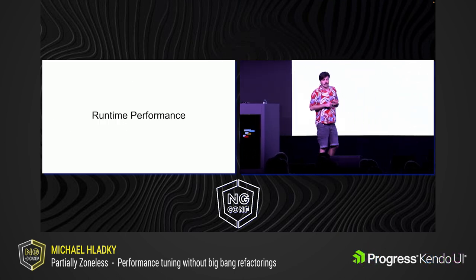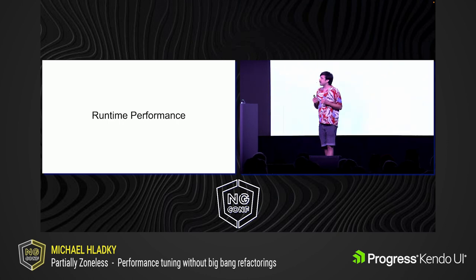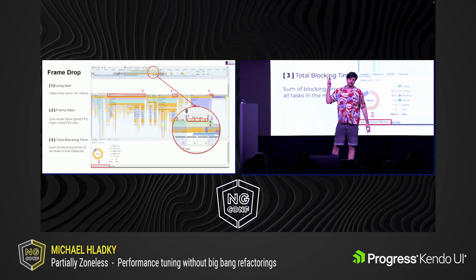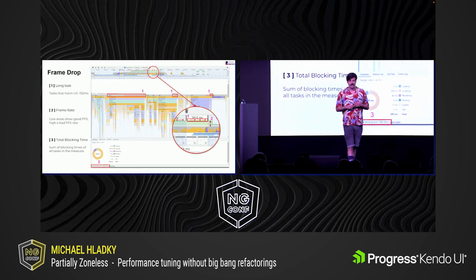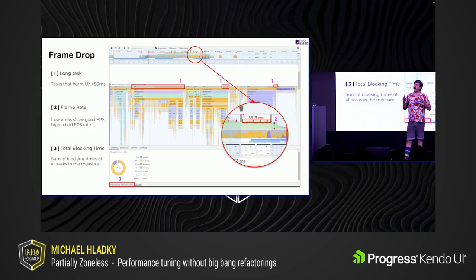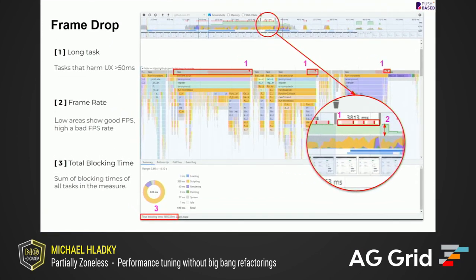To understand a little bit of what I tried to focus on, I will show you this next slide here, where I highlight basically long tasks. This is one of the easiest things that you can spot in flame charts that will give you a first glimpse of what is bad or good.